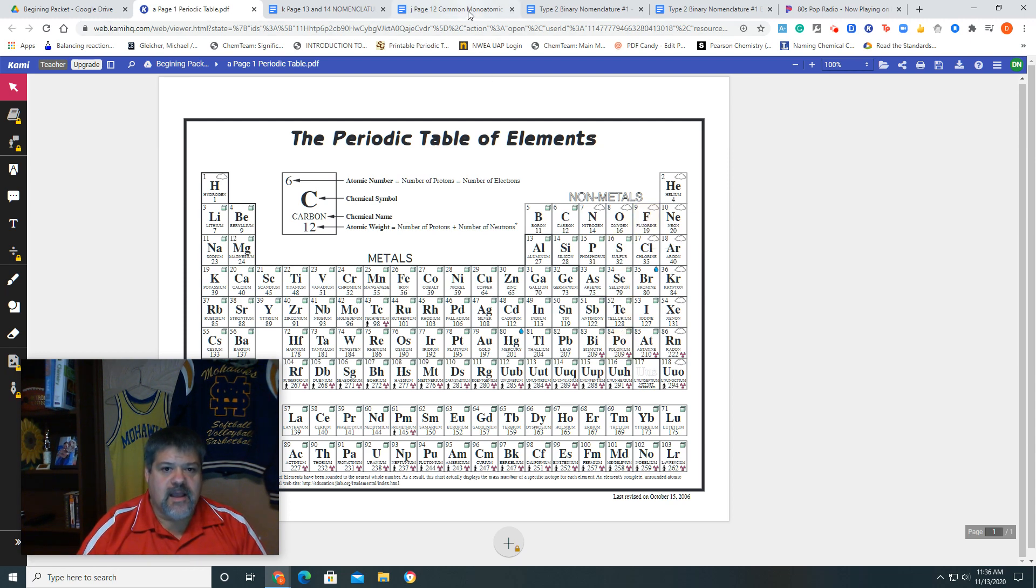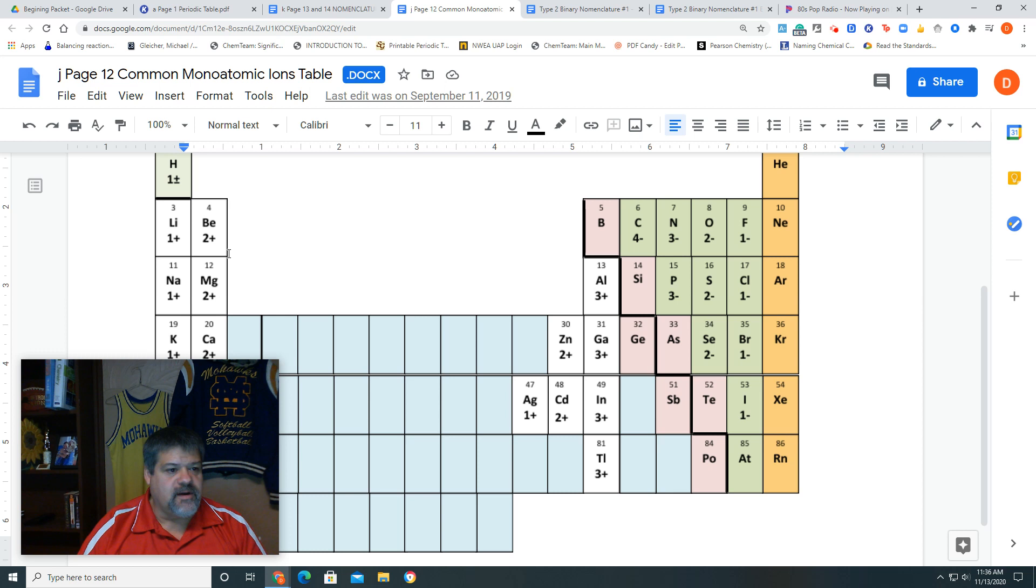Looking at our common monatomic ions table from page 13, we see tin here and fluorine here. Fluorine is the only one with a listed charge. We don't have a charge for tin, so this is Type 2.